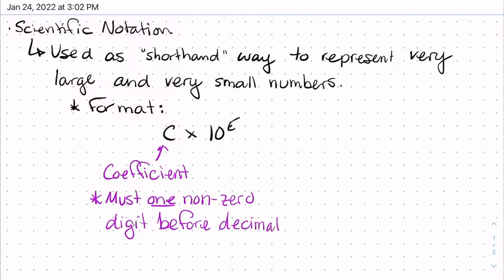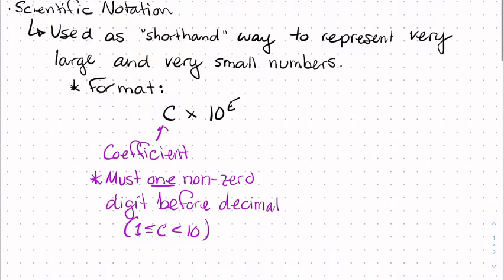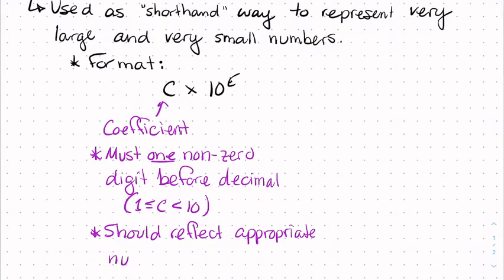One and only one. Essentially, this means that our coefficient is going to be greater than or equal to 1, and it's always going to be less than 10. It's always going to be 1 point something to 9 point something. And this part of the value is what should reflect the appropriate number of significant digits for whatever value we're trying to represent.